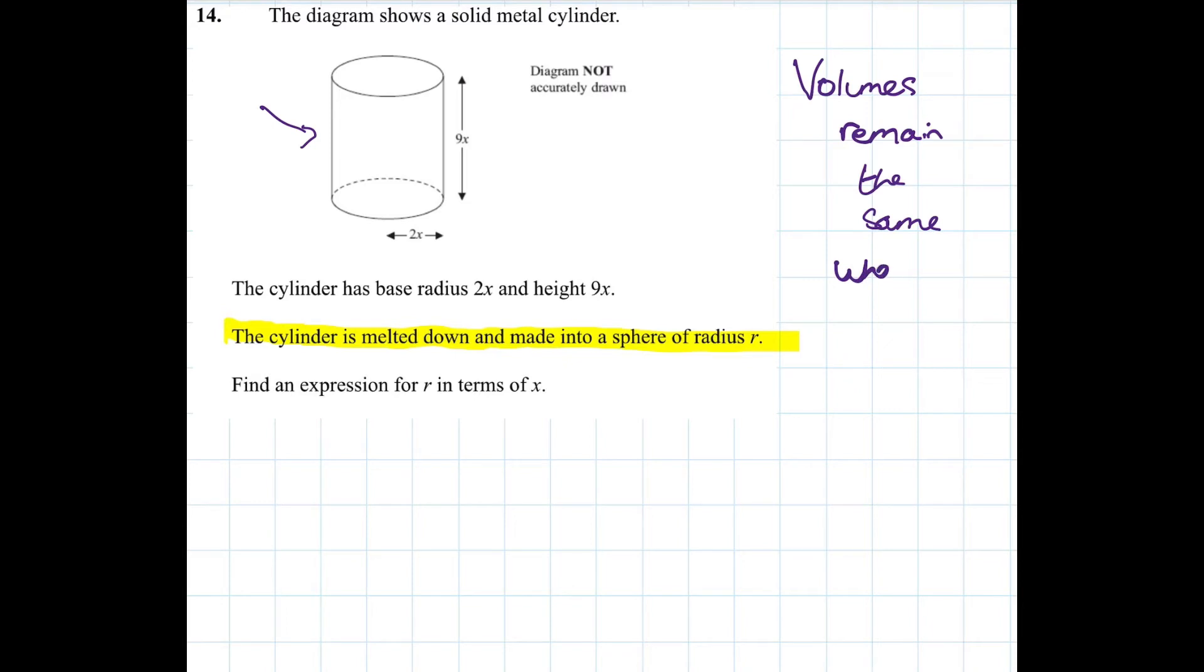So the volumes remain the same when it's melted. Okay so once it's melted down and made into a sphere the volumes are the same. So now it just becomes a bit of a formula problem.